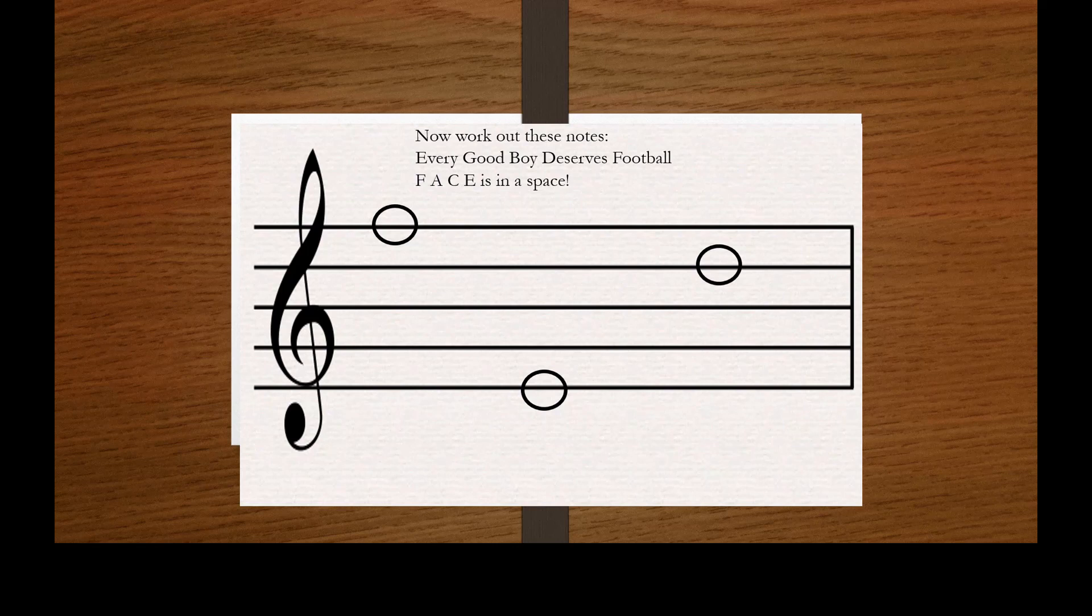Okay folks, so we're looking at the first one. It's the top line, so every good boy deserves football—that is an F. Again, it's another line, and it's the first line, so it's E for every. And the last one is also a line: every good boy deserves. And you've got the word fed.